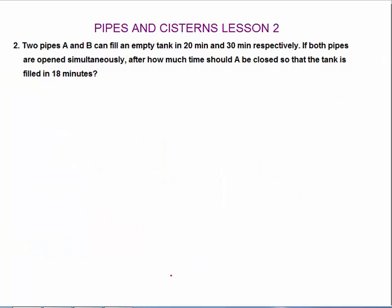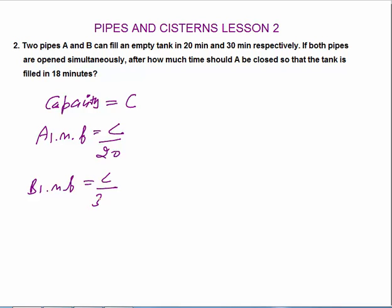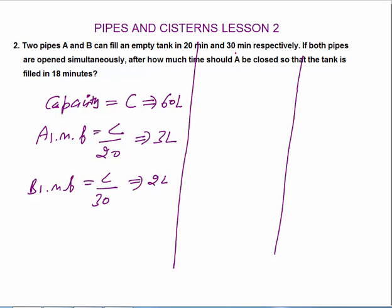The next question: two pipes A and B can fill a tank in 20 minutes and 30 minutes respectively. Both pipes are opened simultaneously. After how much time should A be closed so that the tank gets filled in 18 minutes? Assume capacity is 60 liters, the LCM of 20 and 30. So pipe A one-minute fill is 3 liters and pipe B one-minute fill is 2 liters.